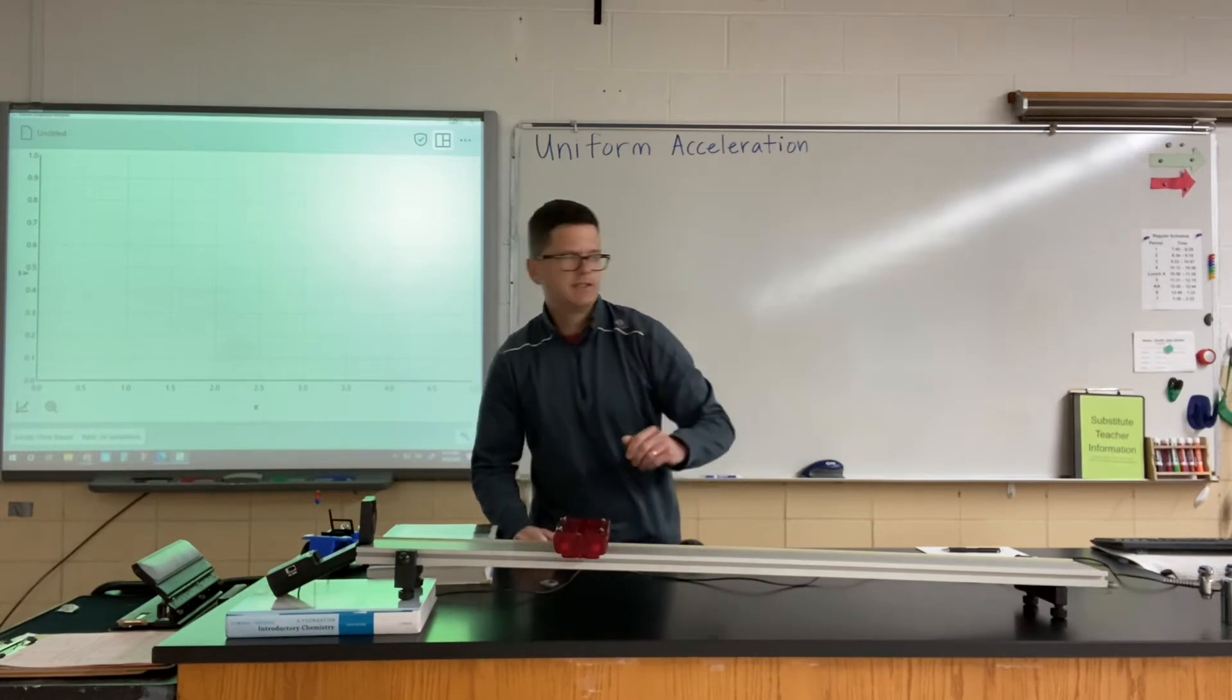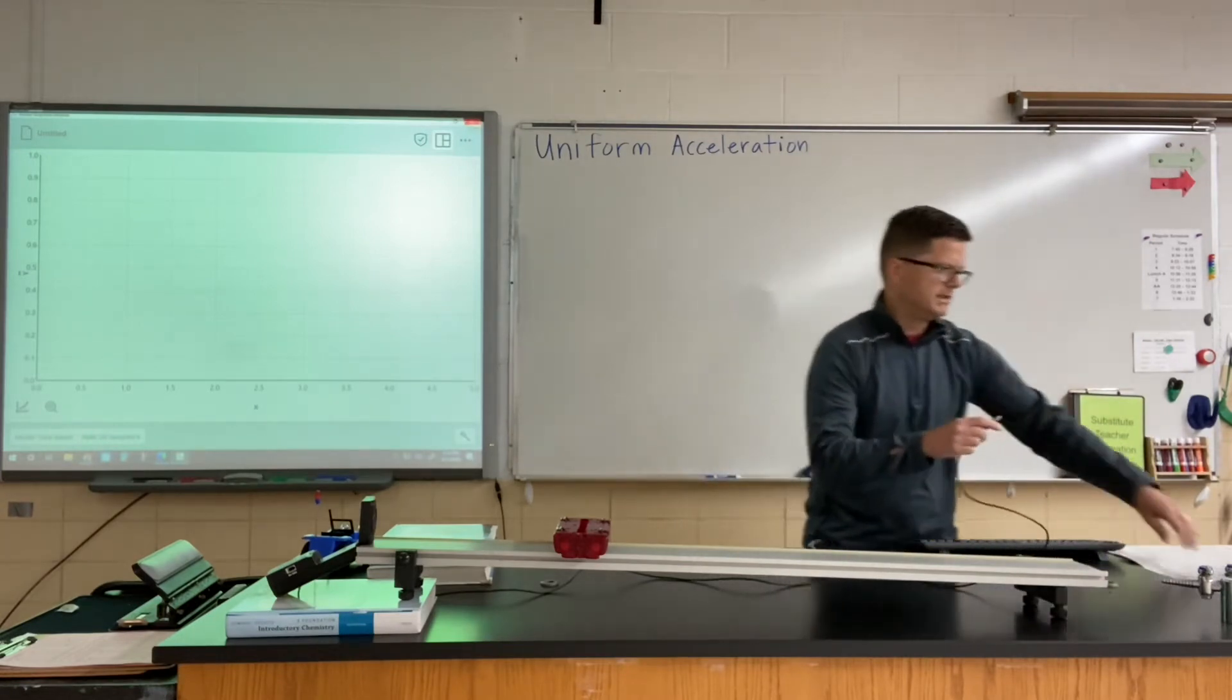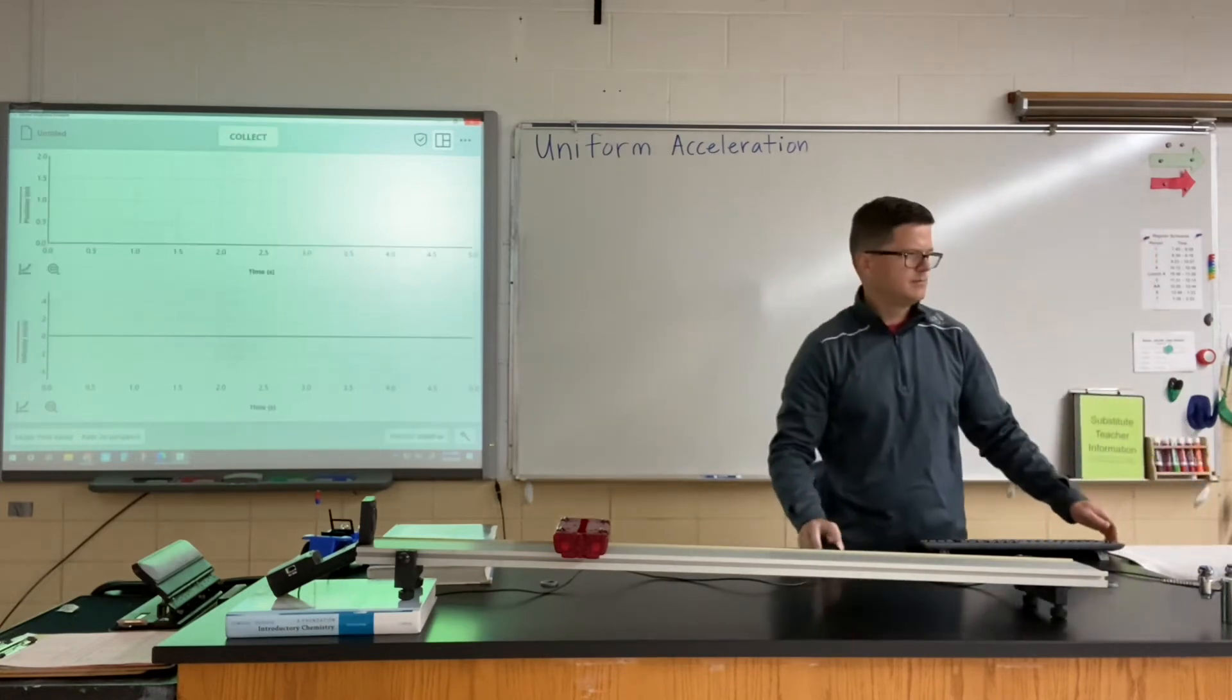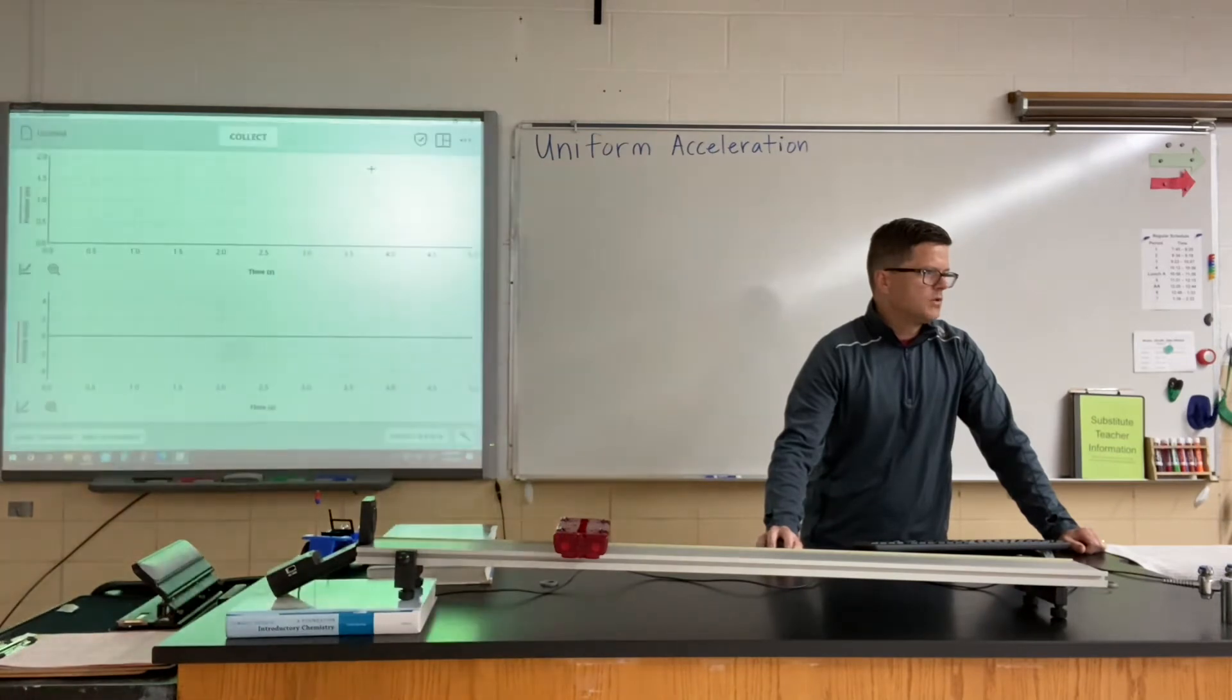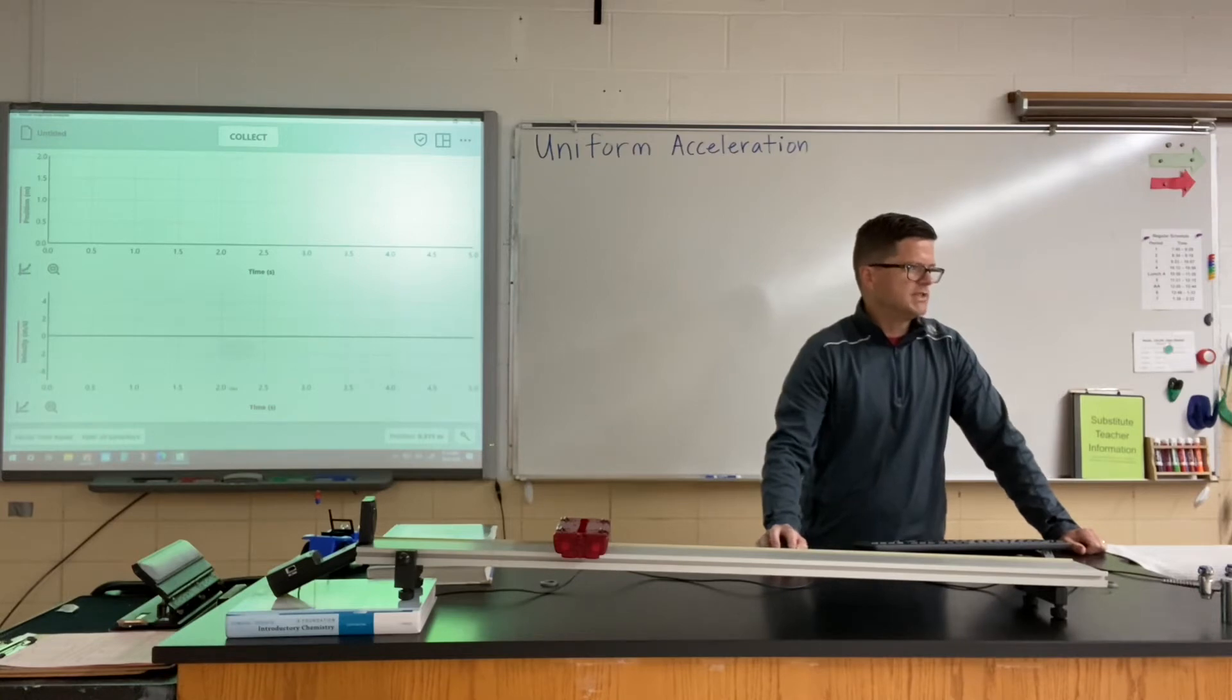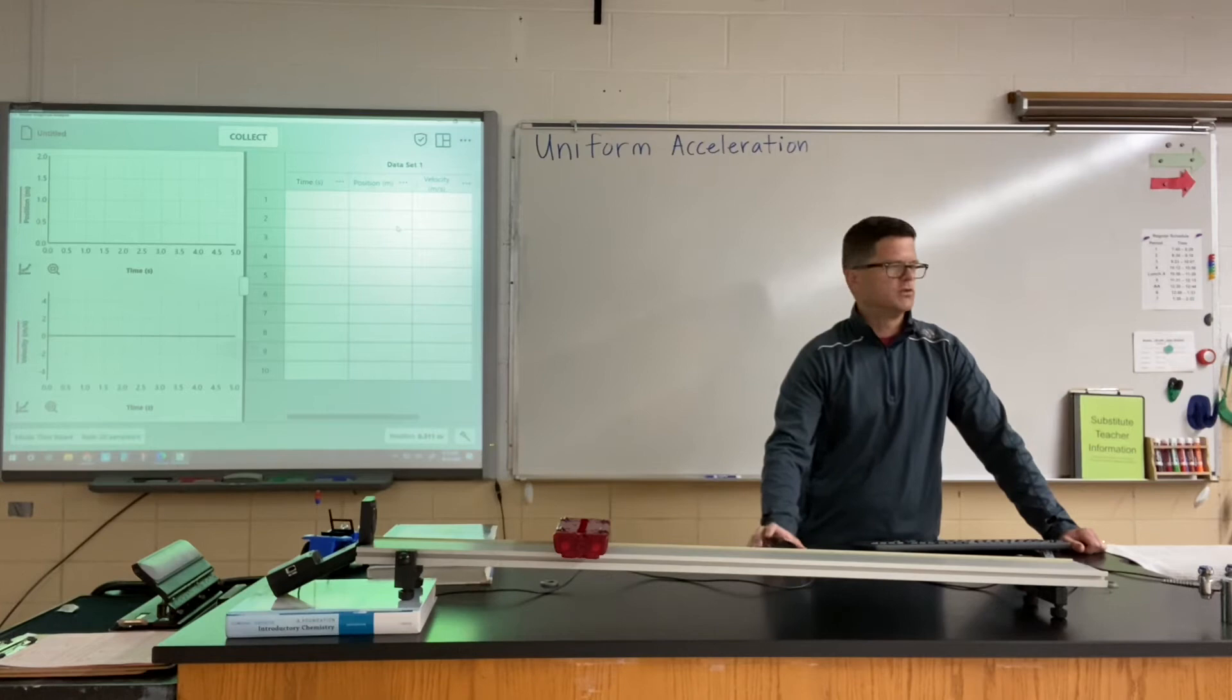Let's go ahead and get graphical analysis set up. There's some settings that I want to play around with. I'll go ahead and plug in the detector, you'll hear it start clicking. On the screen you can see I've got a position versus time graph and a velocity versus time graph up by default. I'm also going to be interested in the data table here, and we're actually going to take our data points and carry those over to Google Sheets for our analysis.